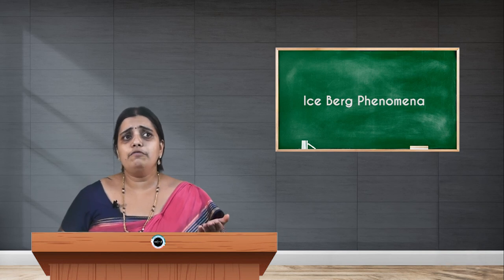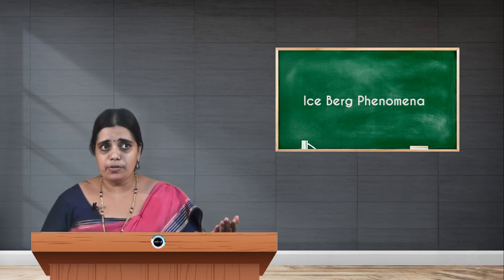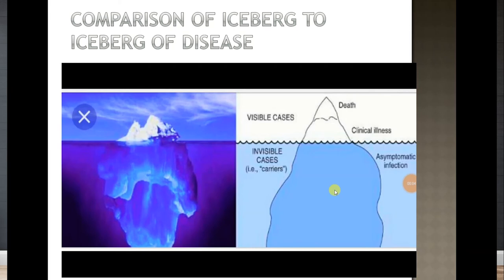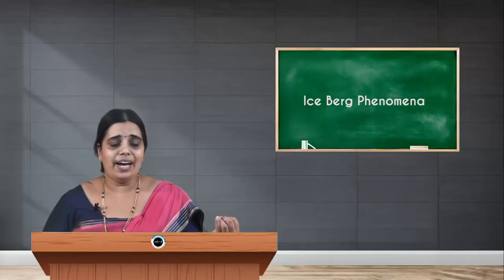Now, the floating tip is the one which shows you symptomatic, apparent and diagnosed case. Line of demarcation is nothing but a separation between apparent and inapparent case. Submerged portion is the one which is asymptomatic, inapparent, undiagnosed, carrier and latent phase.